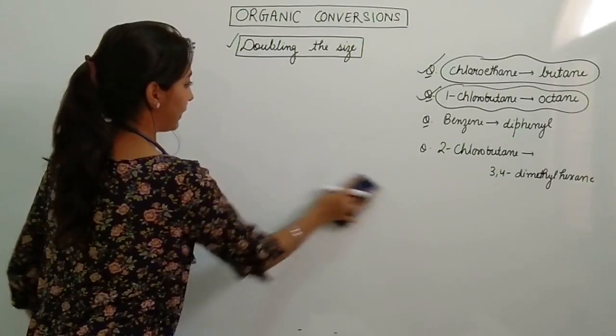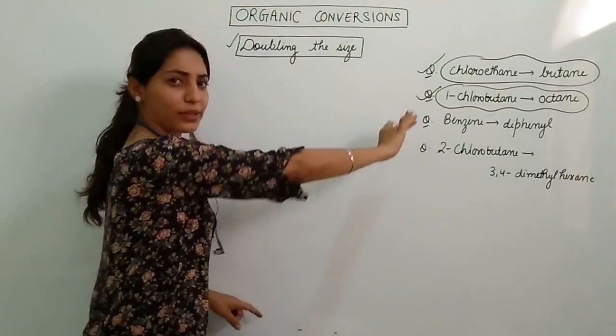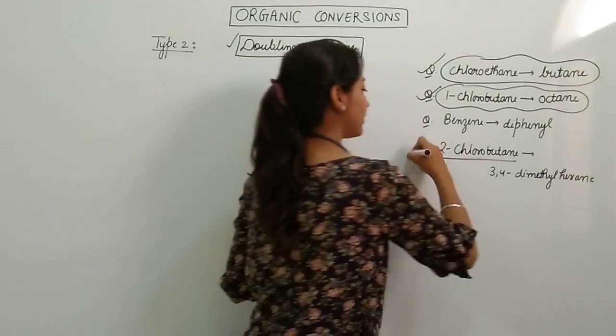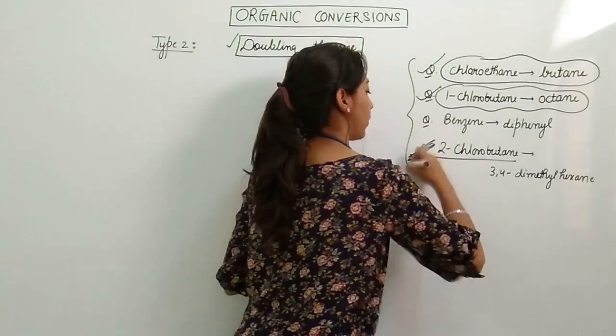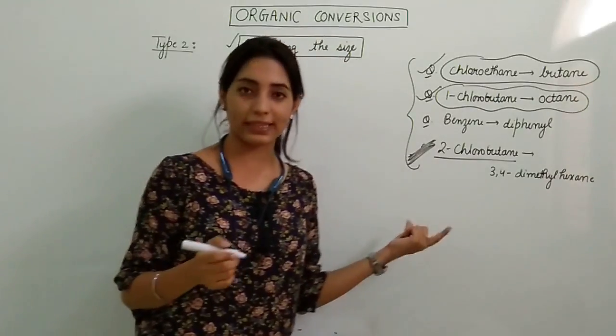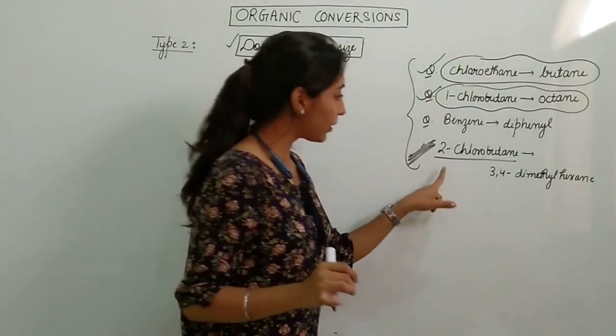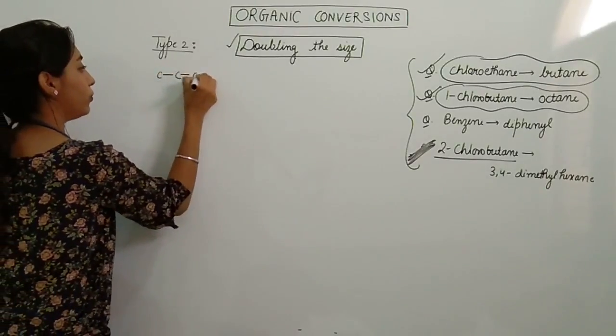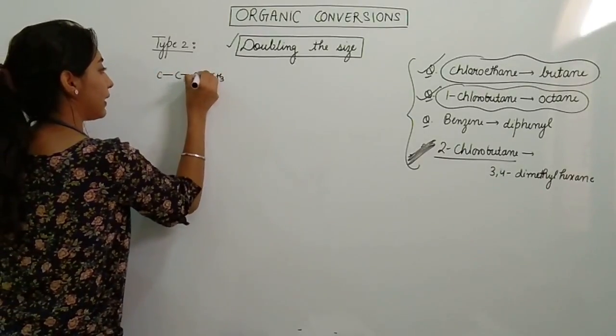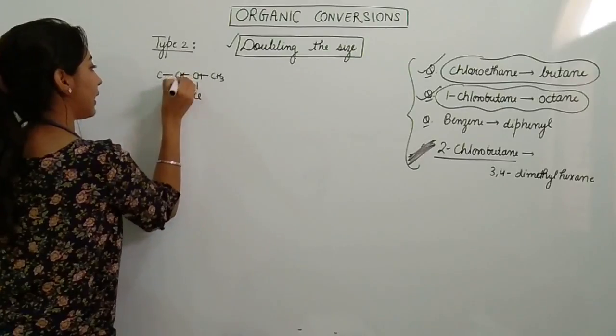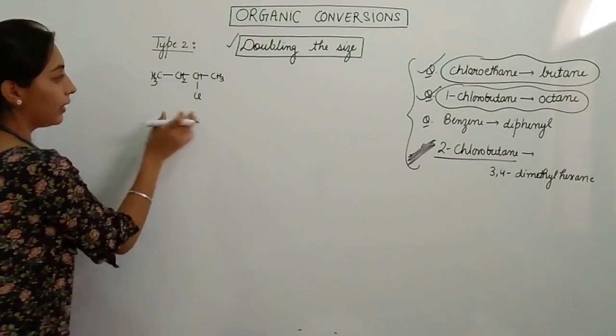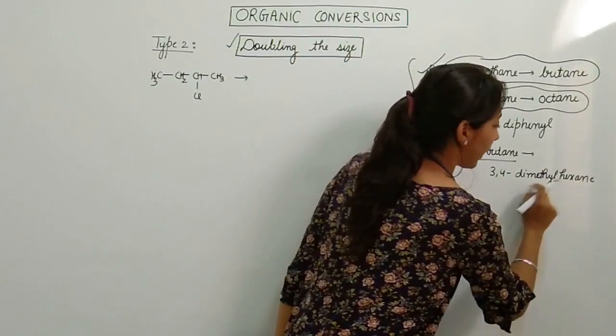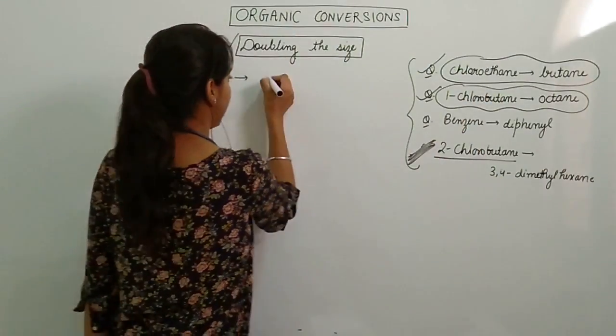First I will be taking this fourth question and then I will go to the third question. This is 2-chlorobutane and this is like out of all of them, this is one very good question which can be asked in exam. Fine? Let's see what the question is. 2-chlorobutane. I will write it. 1, 2, 3, 4. CH3-CH-Cl-CH2-CH3. So this is 2-chlorobutane and this has to be converted to 3,4-dimethylhexane. I will write it.